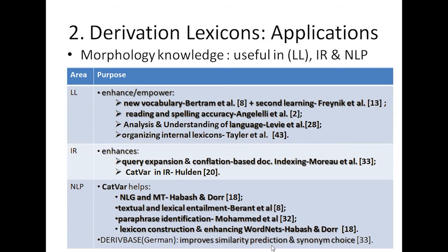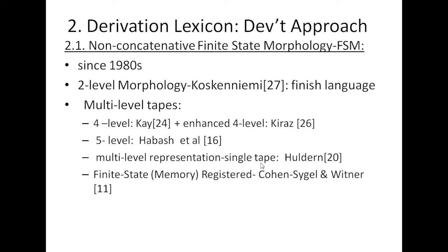In terms of development approaches, finite state morphology is an important technique for derivation and inflection. For non-concatenative languages, it requires modifications to handle multiple levels. Development started in the 1980s with Finnish two-level morphology, later modified continuously from four-level up to five-level, then a single tape representing multiple levels, and finite state transducer techniques trying to improve the limitations of previous approaches.